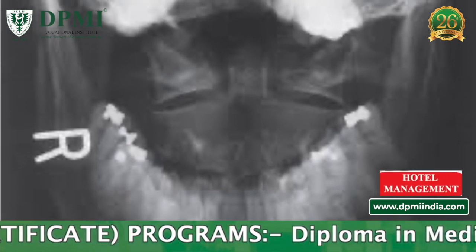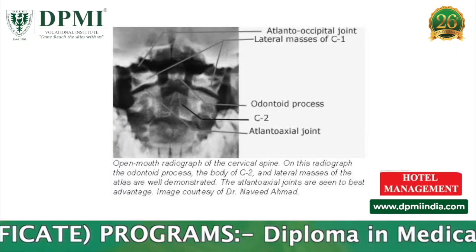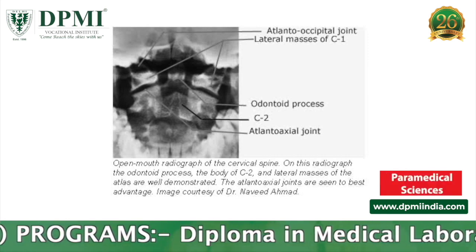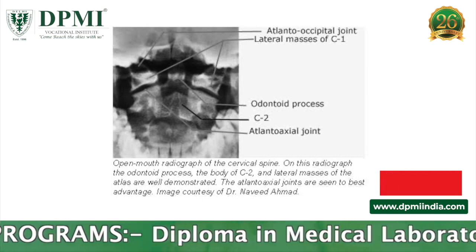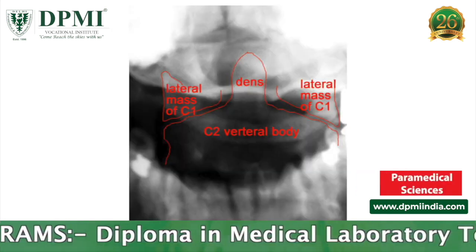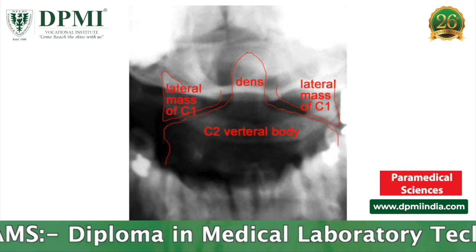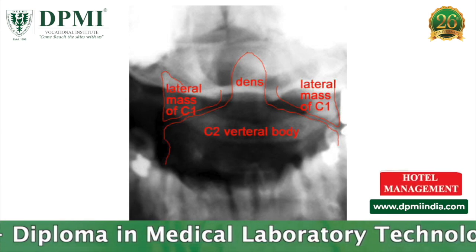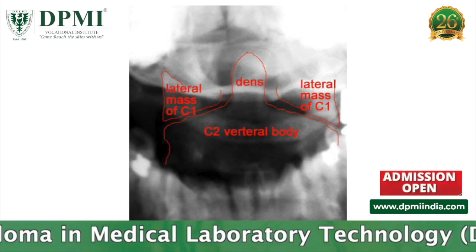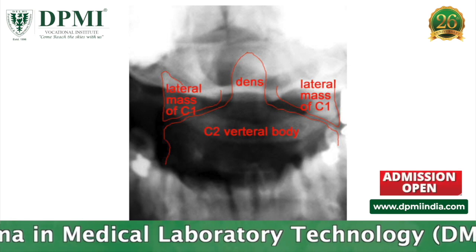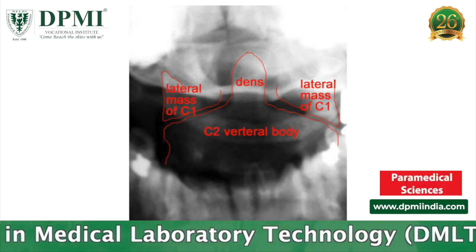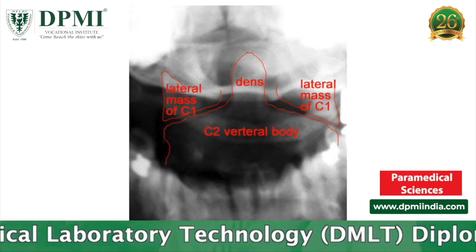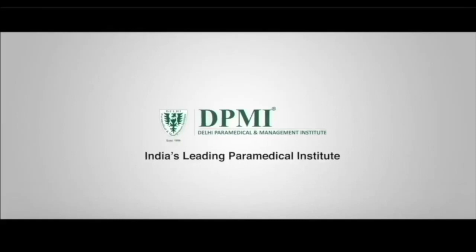Image evaluation: the inferior border of the upper central incisors should be superimposed over the occipital bone. The whole articulation between the atlas and axis must be demonstrated clearly, including the odontoid process and vertebral body of C2, lateral masses and transverse processes of C1, and the atlanto-axial joints demonstrated through the open mouth.